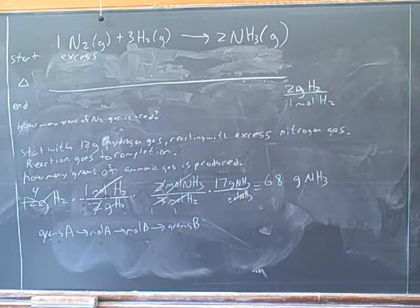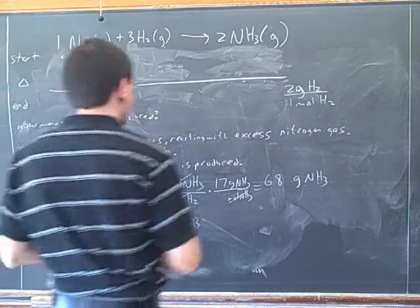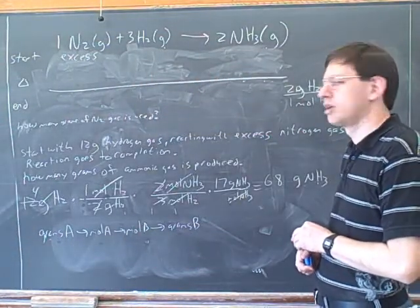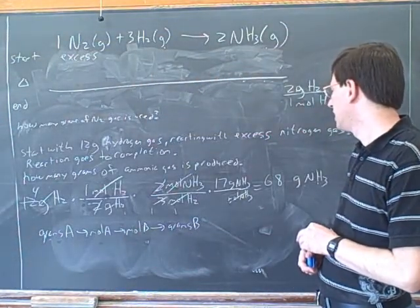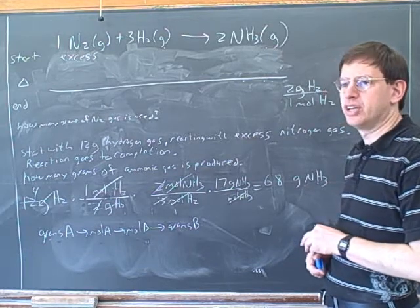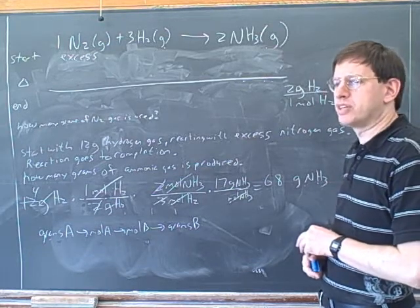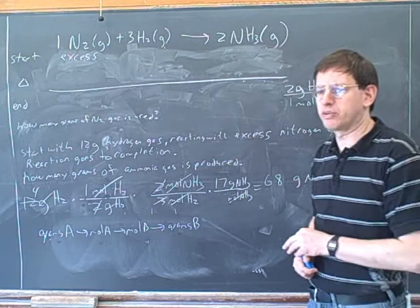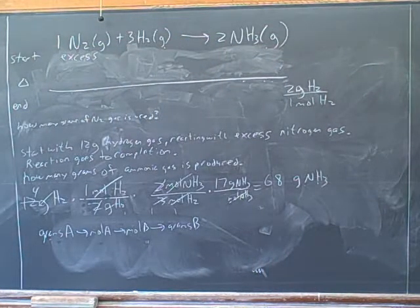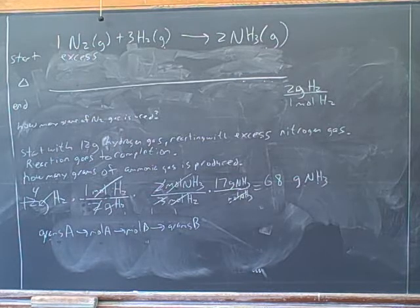We have to ask: what is our starting information? What's the starting information that you're using? The answer is 68 grams of NH3 — not over anything, just 68 grams. That is one possible starting information.